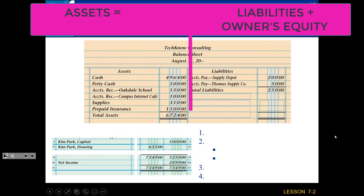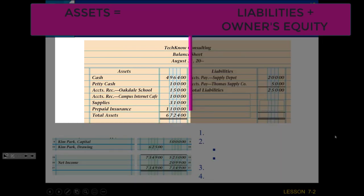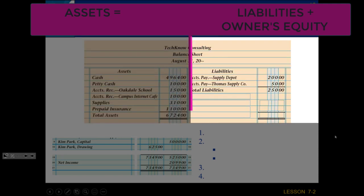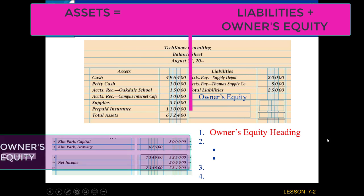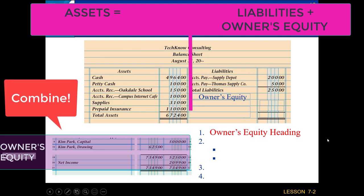The only thing we have left in our accounting equation is the owner's equity portion. We've got our assets on the left side and liabilities started on the right side. Now the last thing is to drop in the owner's equity heading under liabilities. Looking back at the worksheet, we have the capital, drawing, and income accounts left to record. Under the owner's equity section on the balance sheet, we take all of these and combine them — we only report the capital account.